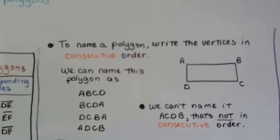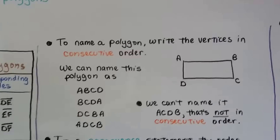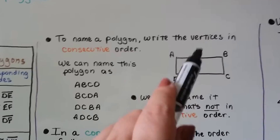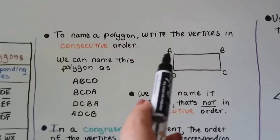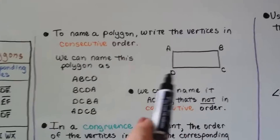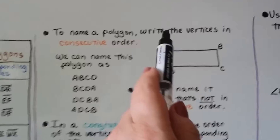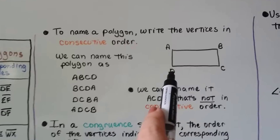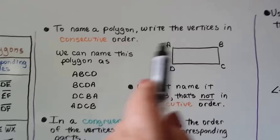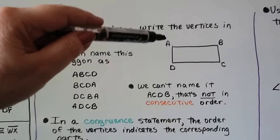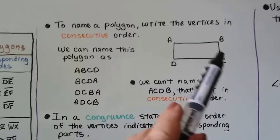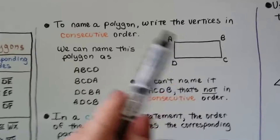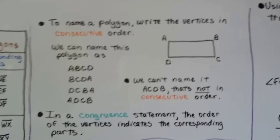To name a polygon, we write the vertices in consecutive order. We can go clockwise or counterclockwise, as long as we do one after the other. So this could be polygon ABCD, or BCDA, or going counterclockwise: DCBA or ADCB. But we can't start at A and then go to C, then D, then B — because that's crisscrossing and not consecutive order.